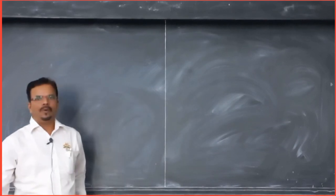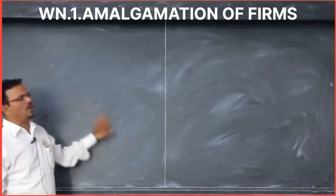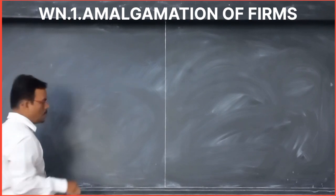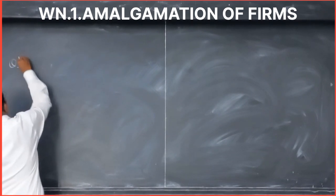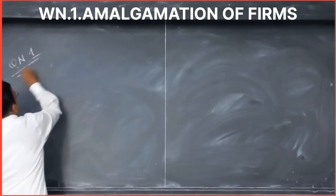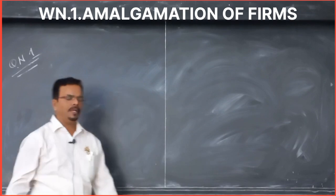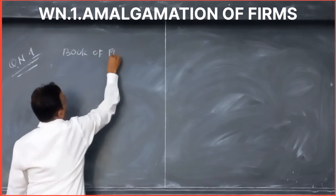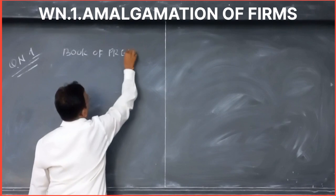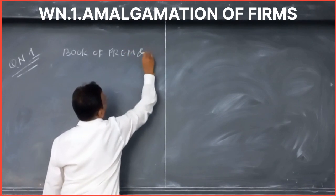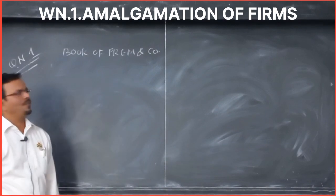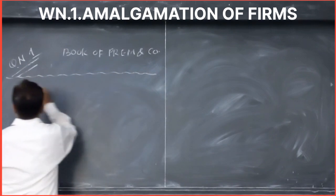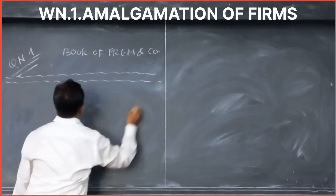Let's do the second part of the solution of the amalgamation of firm. Question number one: amalgamation of firm. Let's do the first part in the books of Prem and Company. We have to prepare the realization account for 15 lines. Let's draw the format for the realization account — 15 lines.